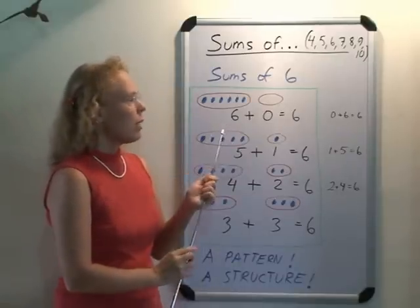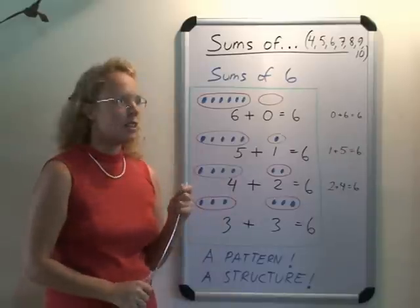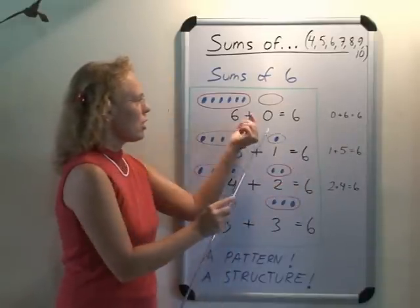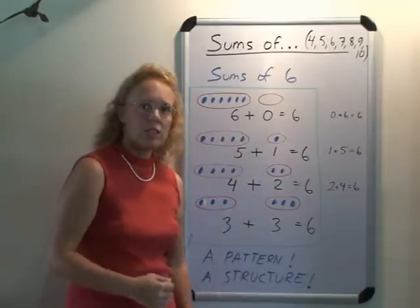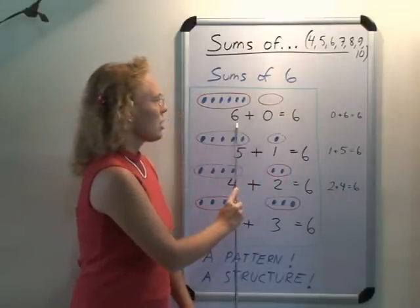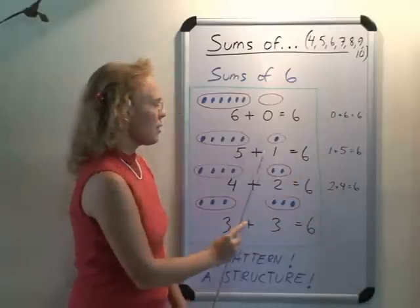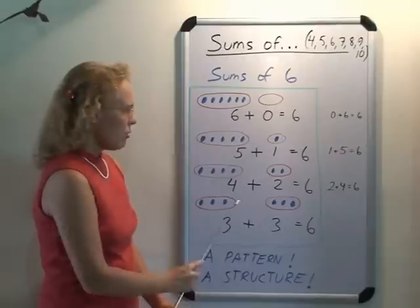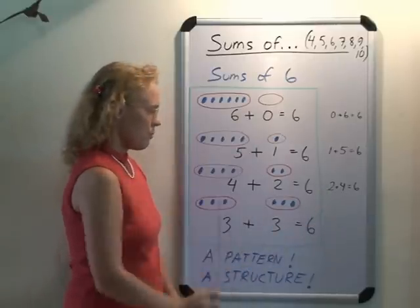And also, you might want to, depending on the child and situation, include the other kind of addition where you switch these addends, because then children learn that the addition is commutative. So, six plus zero, or it can be zero plus six. Five plus one, or they can write one plus five. Four plus two, or it can be two plus four, equals six.